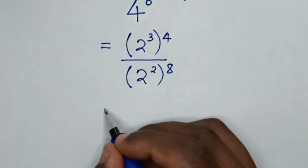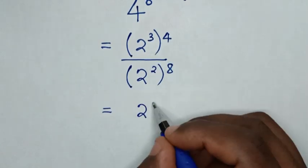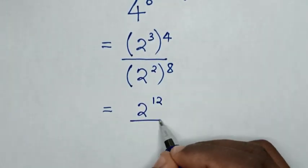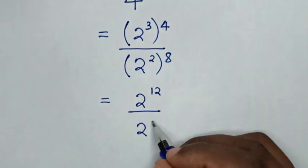Then it will be equal to 2 power 3 times 4, which is 12, over 2 power 2 times 8, which is 16.